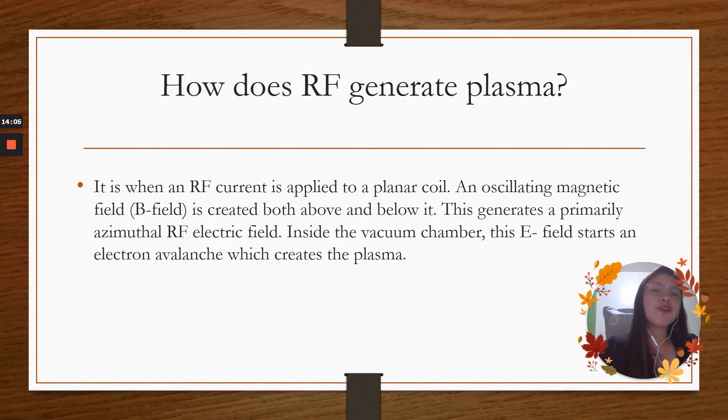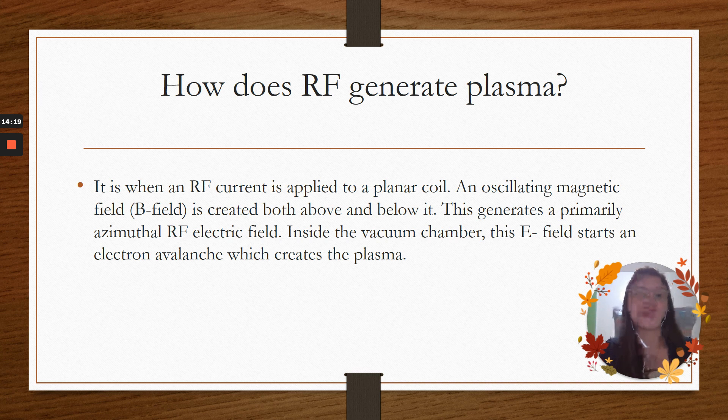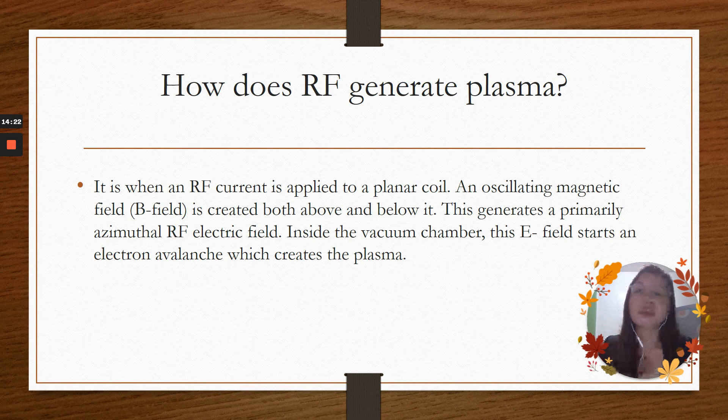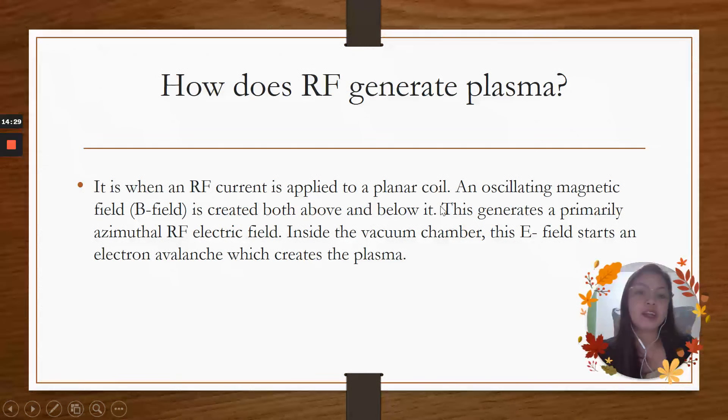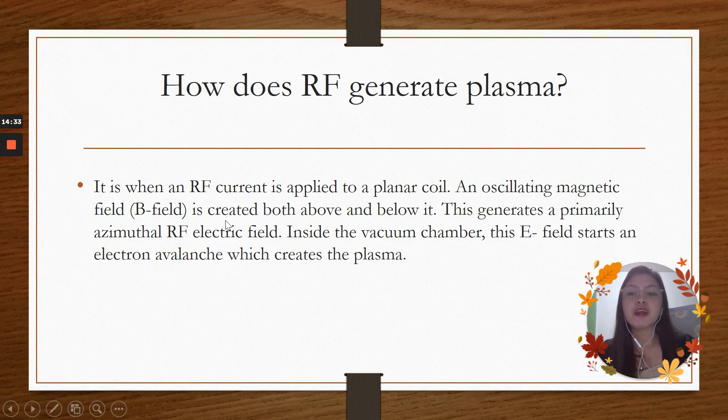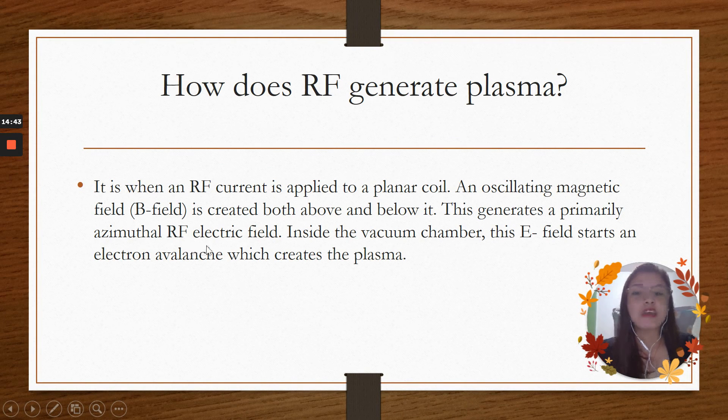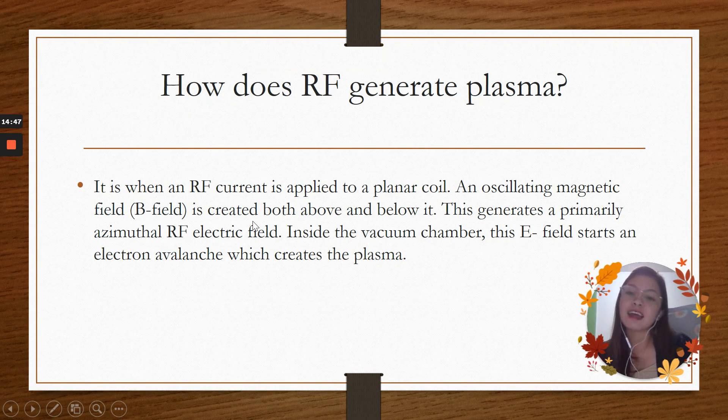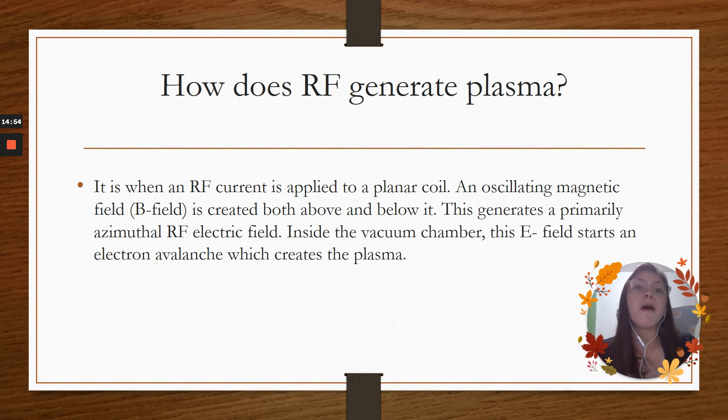For the additional information from the question of Sir John, how does radiofrequency generate the plasma? From the research I had, this is the answer for that question. Radiofrequency generates plasma when a radiofrequency current is applied to a planar coil. An oscillating magnetic field, B field, is created both above and below it. This generates a primarily azimuthal radiofrequency electric field. Inside the vacuum chamber, this E field starts an electron avalanche which creates the plasma. This is how the radiofrequency generates plasma.